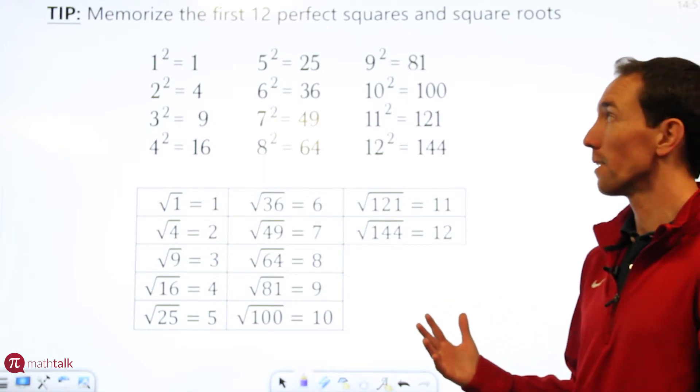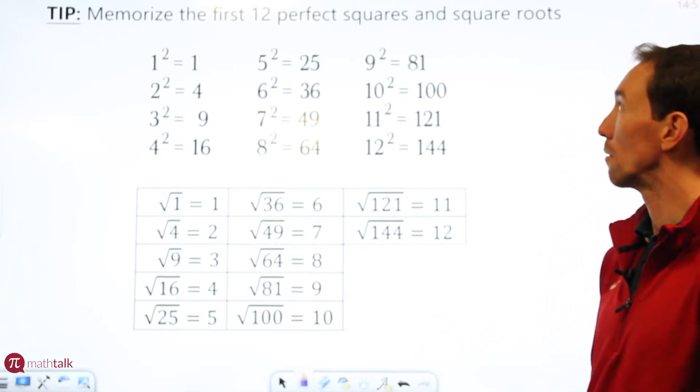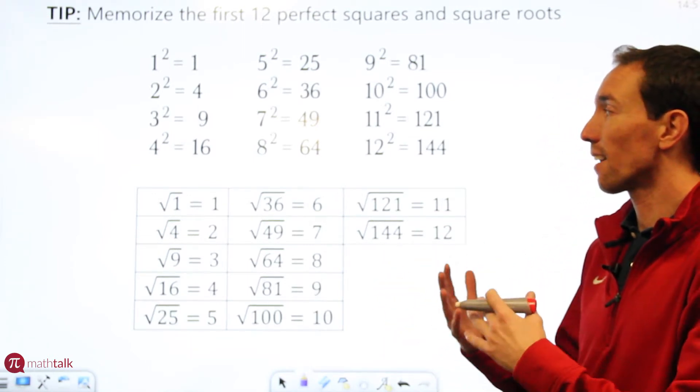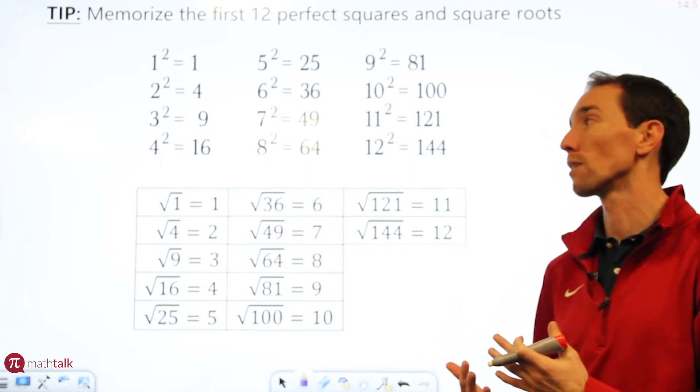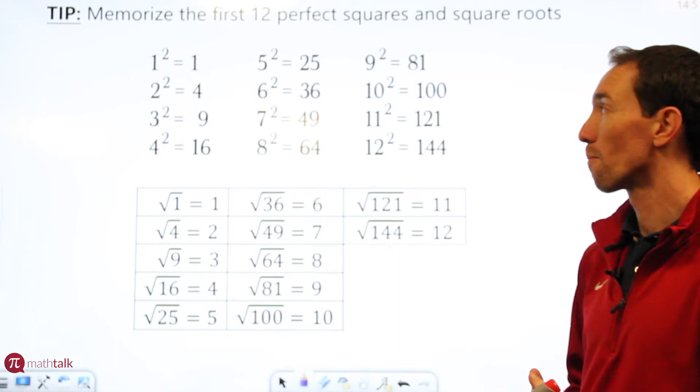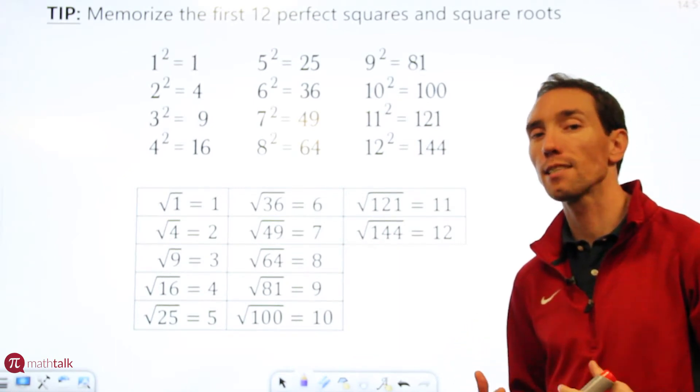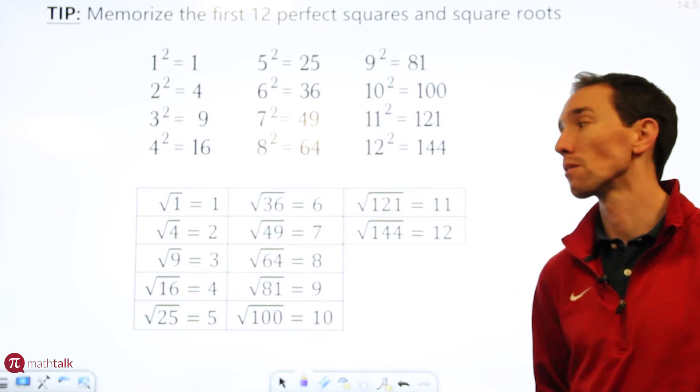So the first thing I want to show you is a list of some common squares and square roots. Go ahead and pause your video for a little bit and take a look at this and really analyze this and try to commit to memory these common squares and square roots. It's the first 12 and really these are going to help you out as you start simplifying square roots and expressions with rational numbers.